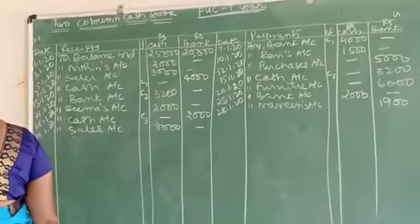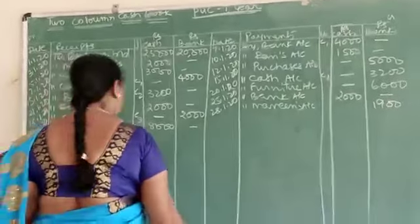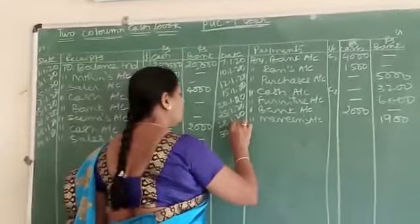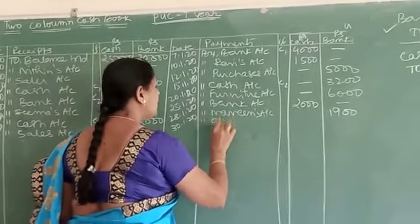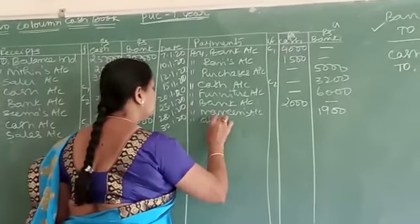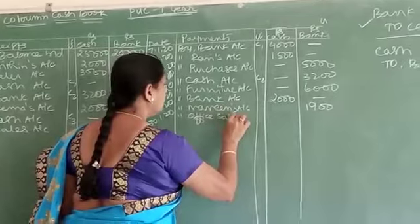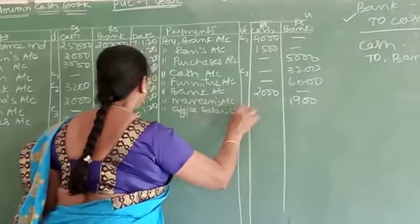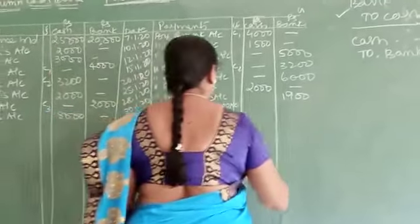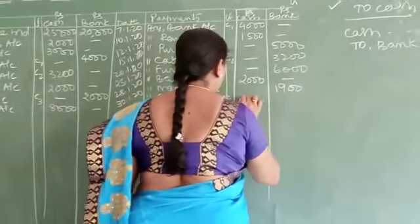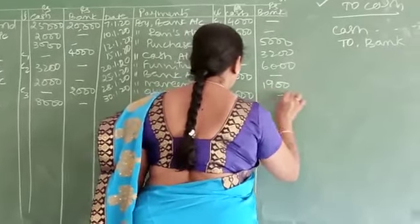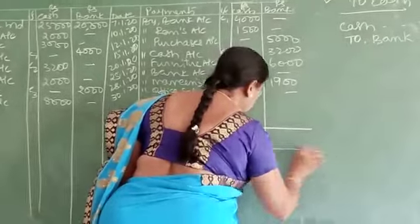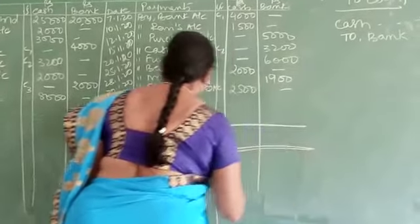Pay the office salary. Come to the credit side, 30,000. Buy office salaries account, and write in the cash column 3,500.